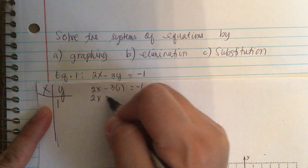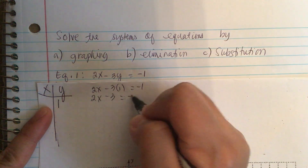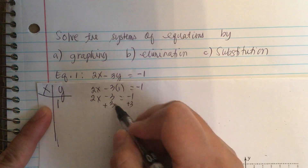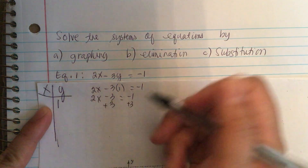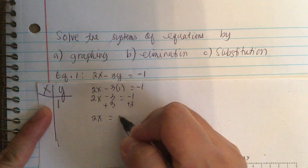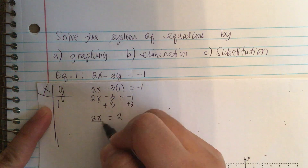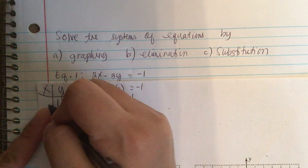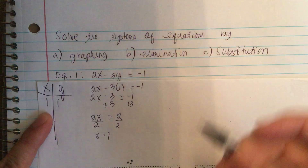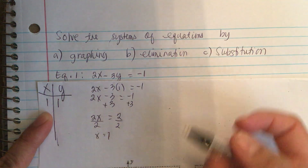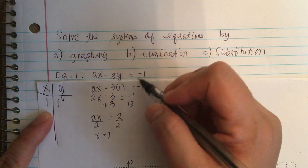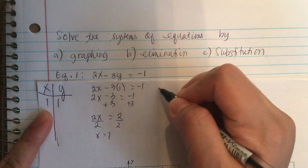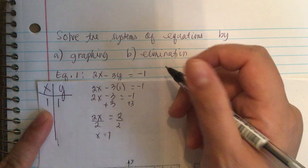So, 2x minus 3 equals negative 1. We add 3 to both sides of the equation. So, 2x is equal to 2. Divide by 2. x is equal to 1. So, we have one point.